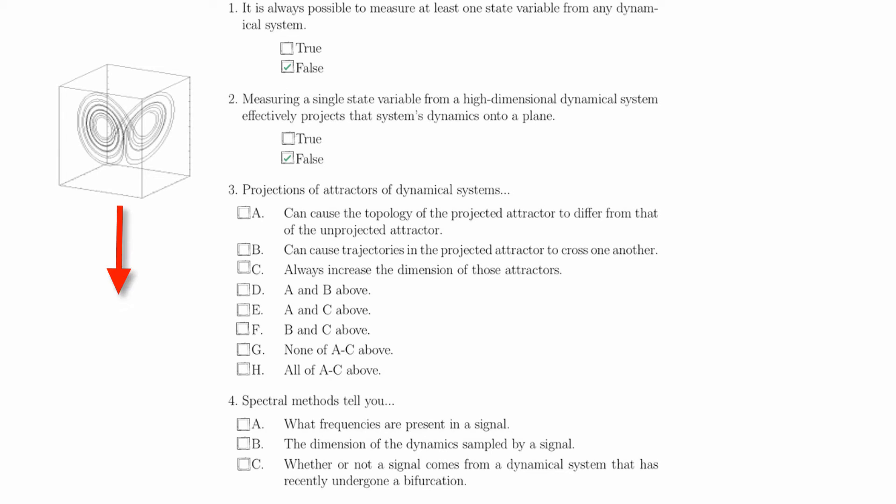Even more simply, think about the Lorenz butterfly. When you project this from three dimensions to two dimensions, it causes several intersections to occur where the two wings meet. That is, projecting from three dimensions to two dimensions causes these trajectories to cross one another in the projected attractor.